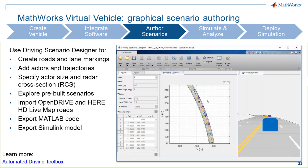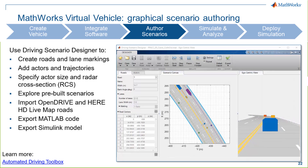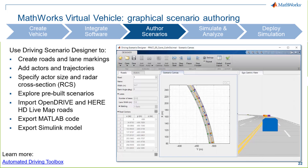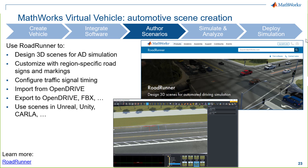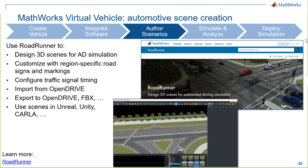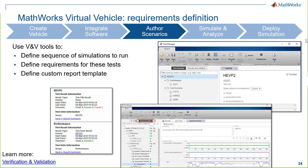Once you have that closed-loop system, you can start defining the scenarios you want to run. One tool shown here is the Driving Scenario Designer app — a user interface where you can define different roads and paths for vehicles using a cuboid interface. We also recently introduced RoadRunner, a tool for creating very complex 3D scenes for different road networks. It has an intuitive interface and can export scenes in formats such as OpenDRIVE or FBX for use in other platforms. You can also use our verification and validation tools to automate sequences of tests, link them back to requirements, and generate custom reports.